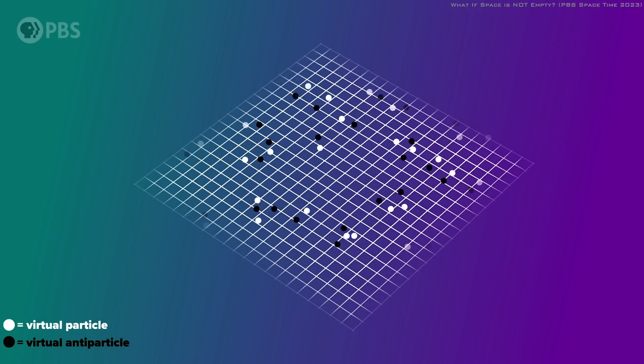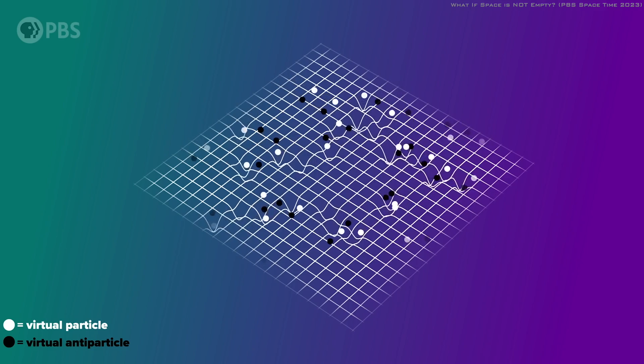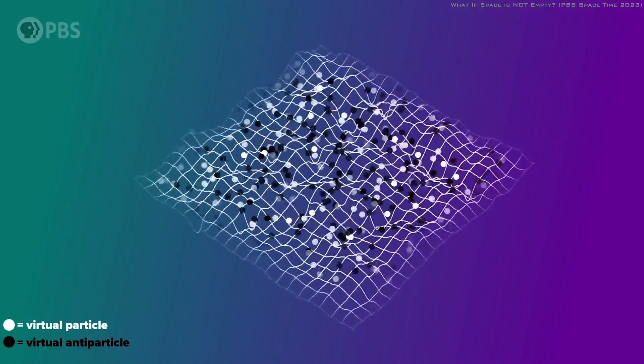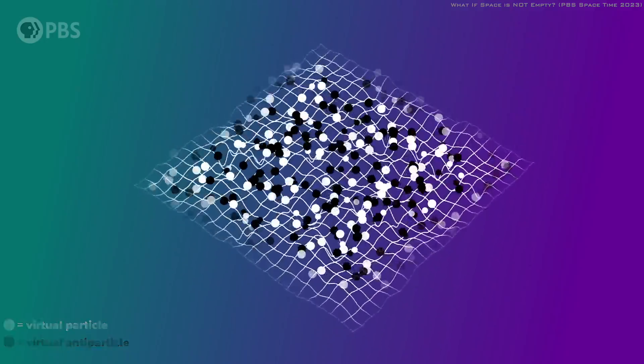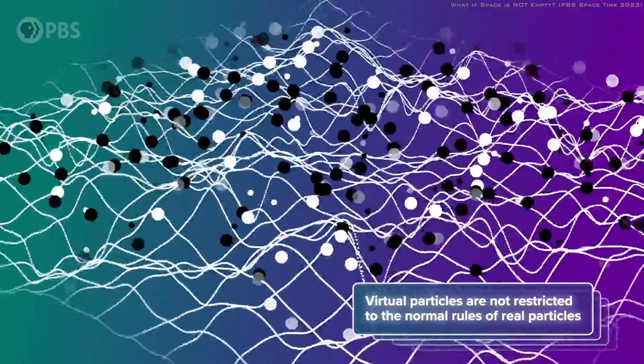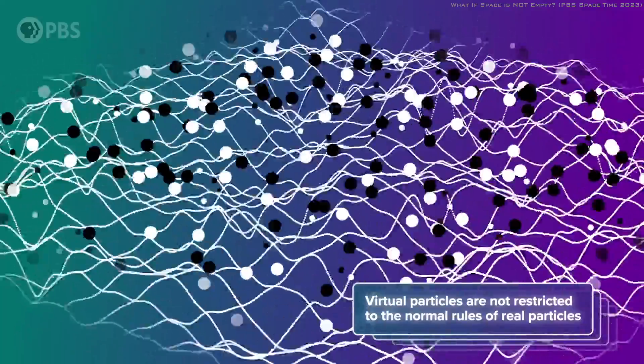When virtual particles emerge, they come hand in hand with tiny gravitational fields. Due to the volatile nature of these quantum fluctuations, space-time's geometry becomes chaotic. Given that these fluctuations exist in a superposition of various states, we perceive space-time's geometry as also being in a quantum superposition.